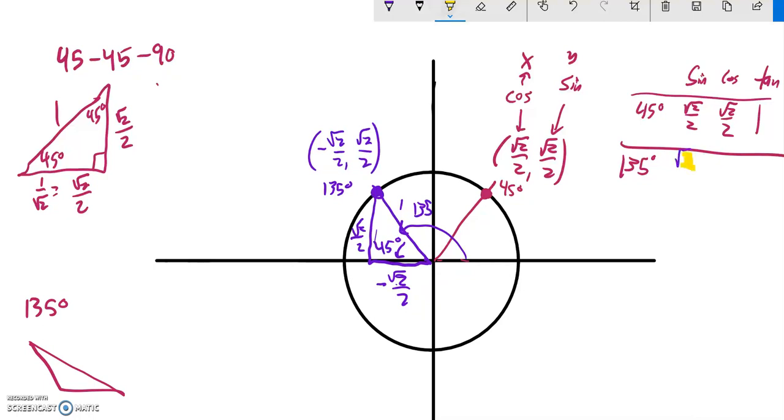It'd be root 2 over 2. And the cosine would be negative that, negative root 2 over 2. And the tangent, something divided by a negative version of itself, is negative 1. Cool.